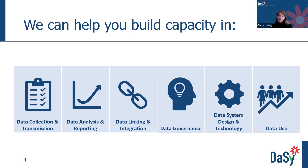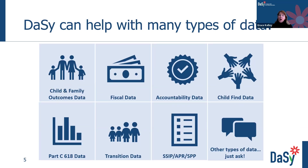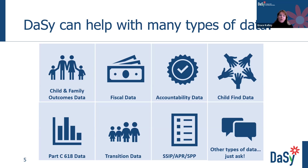DAISY can help with a broad range of data types. Some of what we focus on are child and family outcomes data, fiscal data — what we know about resources and how we allocate them — and accountability data for the public reporting we're required to do. We also support states involved in the differentiated monitoring and support process, child find data, Part C 618 data, SPP APR data that you all just submitted recently, and any other type of data such as personnel data and data around equity.